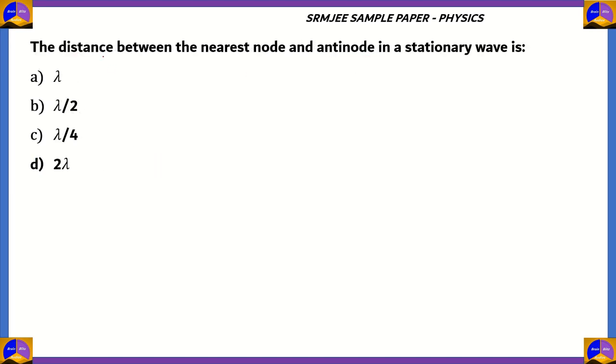Let's look at the next question. The distance between the nearest node and antinode in a stationary wave is lambda, lambda by 2, lambda by 4, or 2 lambda. Well, how do we solve this question? The best way to solve it is to draw a wave and to understand what are nodes and antinodes. So this is a stationary wave and this wave has a wavelength that is lambda. It is divided into two parts. One part goes above the stationary line and the other part goes below the mean position.